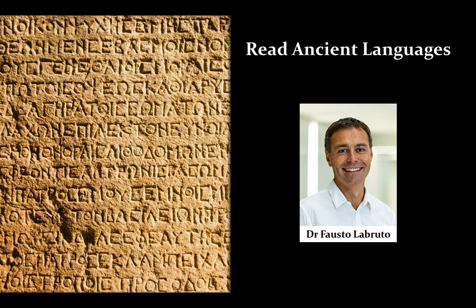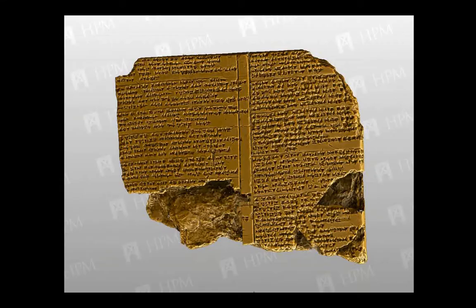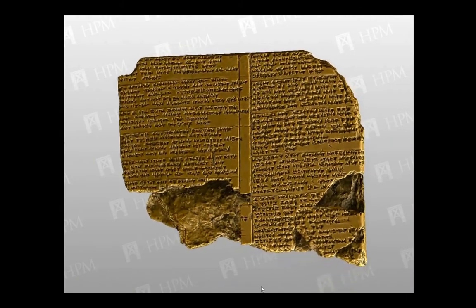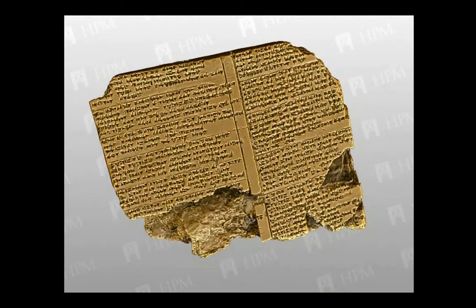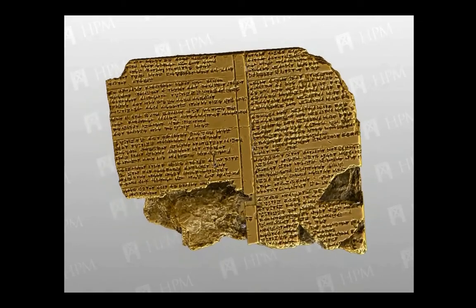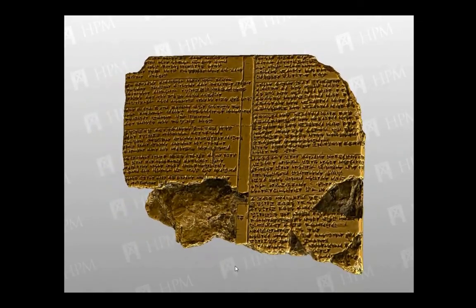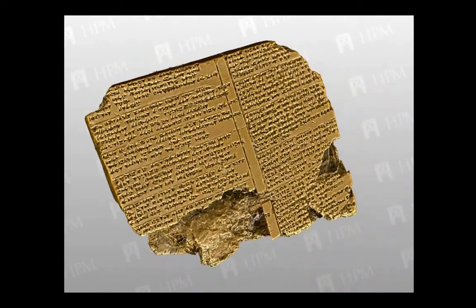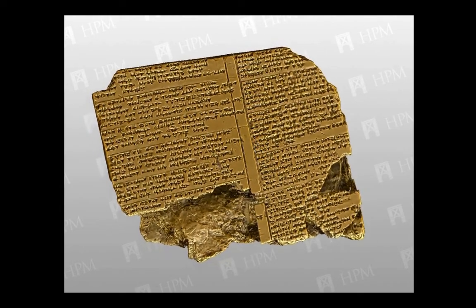Welcome to Read Ancient Languages, I'm Dr. Fausto Labrudo. You're looking at a 3D scan of a clay tablet with a cuneiform text written on it. This clay tablet was written 3,500 years ago, during the Late Bronze Age, in ancient Anatolia, which is modern-day Turkey, in a language called Hittite. The image is kindly provided by the University of Mainz in Germany.